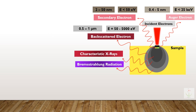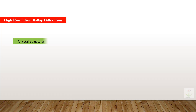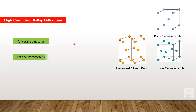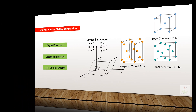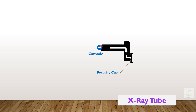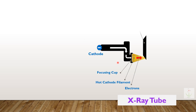These two types of X-rays are known as characteristics X-rays and Bremsstrahlung radiations. The characteristics X-rays are widely used in many characterization techniques like high-resolution X-ray diffraction, which identifies the crystal structure of materials, the lattice parameters, size of particles, and many other things. These X-rays are commonly produced in X-ray tubes, which all have the same basic function and components.